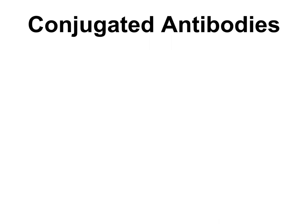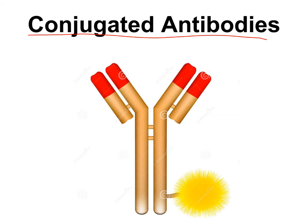In the previous lecture, I talked about two different types of diagnostic tests: precipitation reactions and agglutination. The diagnostic tests I'm going to talk about in this lecture involve conjugated antibodies. Conjugated antibodies are antibodies that have had another molecule attached to the constant region of the heavy chain. This molecule could be a radioactive molecule, a fluorescent molecule, or an enzyme. This type of antibody is often called a labeled antibody.